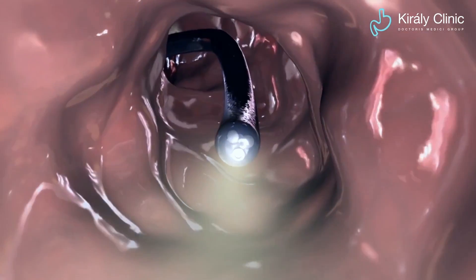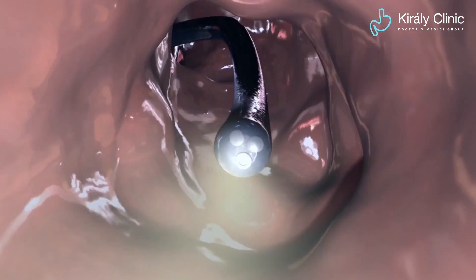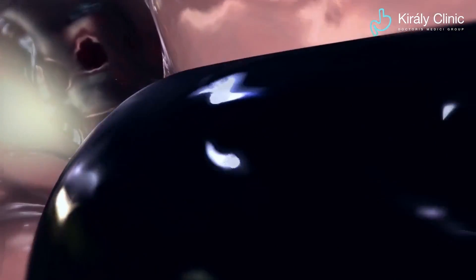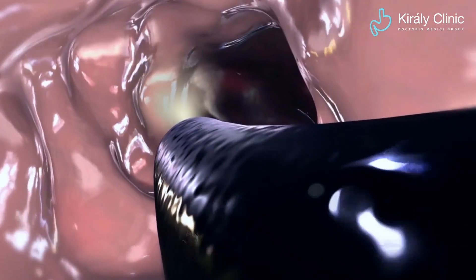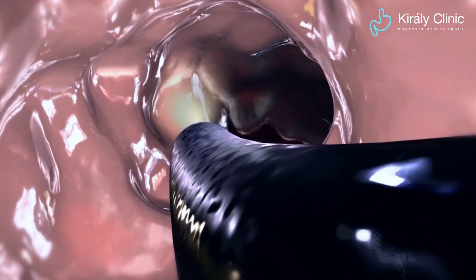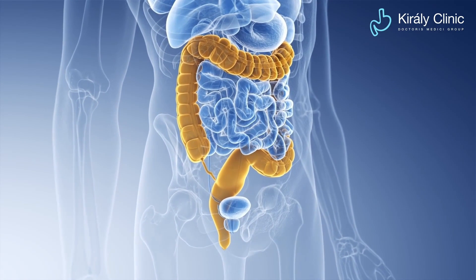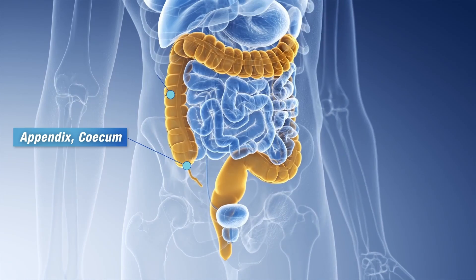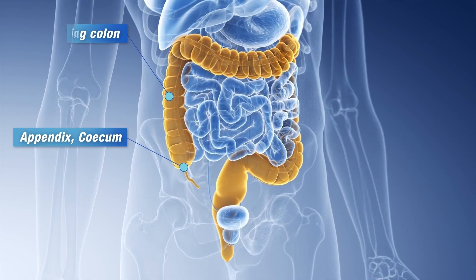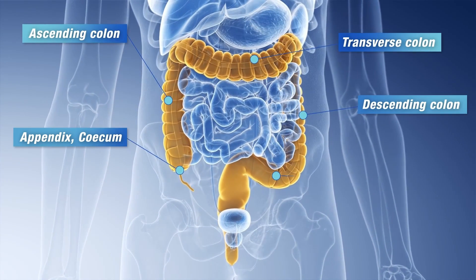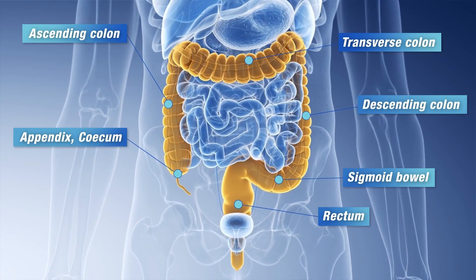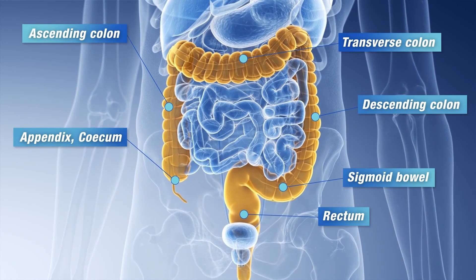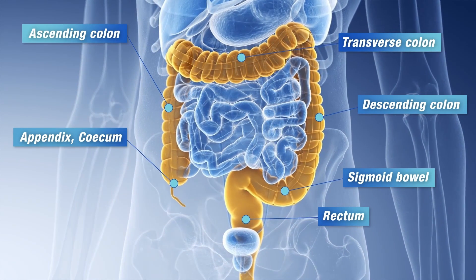Colonoscopy scans the colon from inside, from the intestinal cavity. The examination should only be performed by a gastroenterologist or surgeon experienced in this procedure. The colonoscope examines the cecum, the orifice of the appendix, the ascending, transverse, and descending colon, the sigmoid bowel, and finally the rectum. The role of the colon is the storage of stool and reabsorption of water.